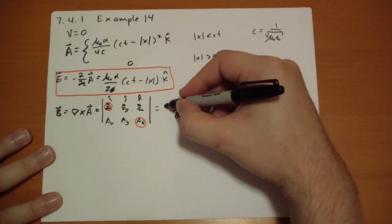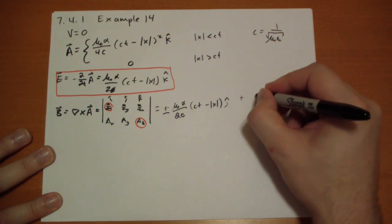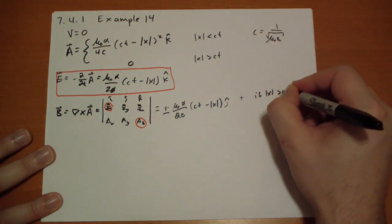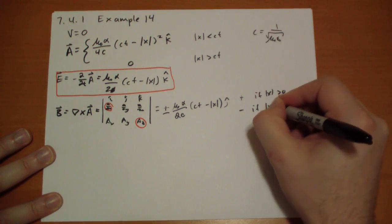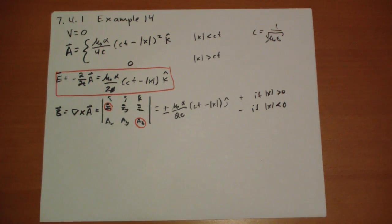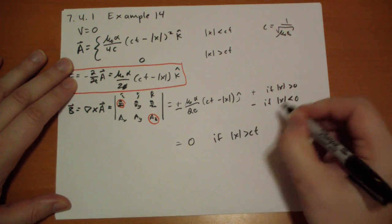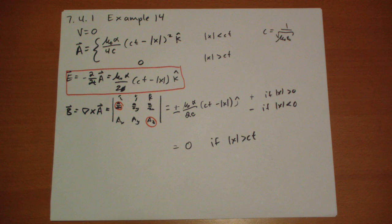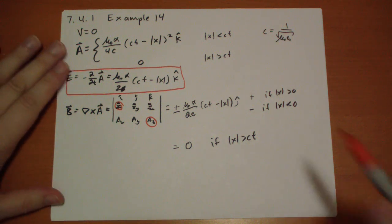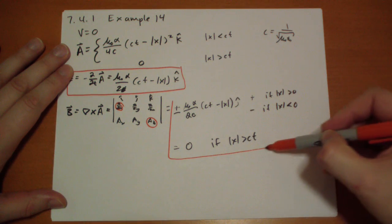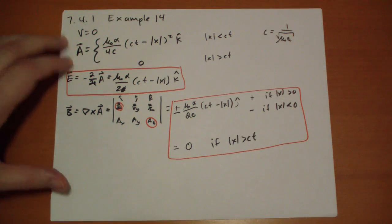And then the x-derivative of the inside is going to give us a plus 1 or a minus 1, depending on whether we are ahead or below x. So if we're in positive x territory, it's plus if x is less than ct, and minus if x is greater than ct. Of course, when the magnitude of x is greater than ct, the b-field is going to be zero.